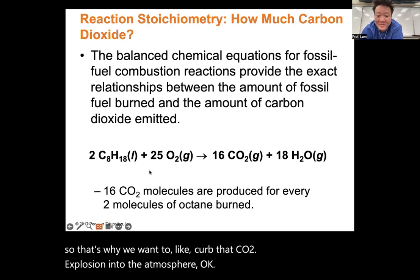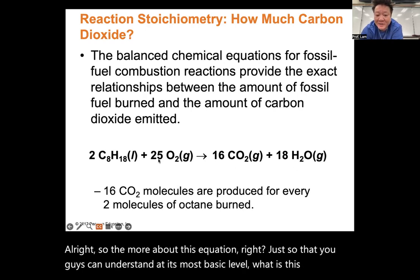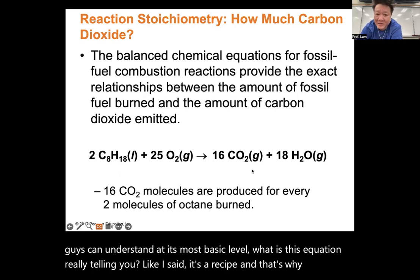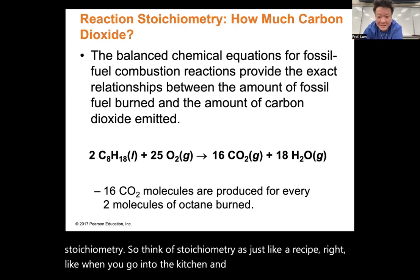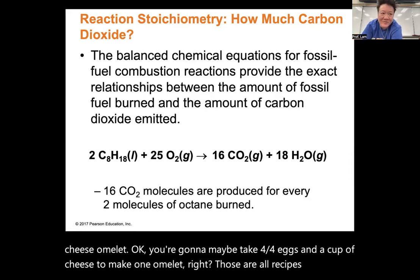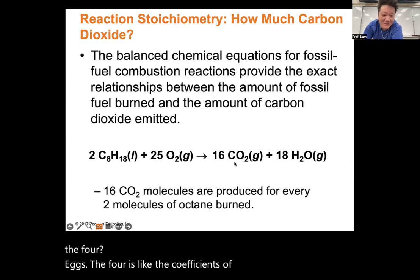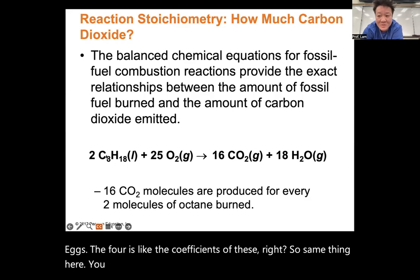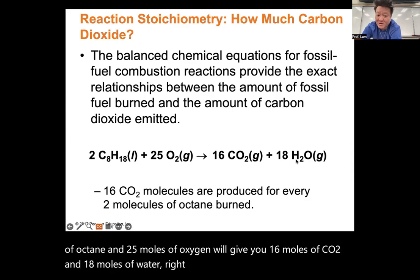That's what we call stoichiometry — think of it as a recipe. Like making a cheese omelet: 4 eggs and 1 cup of cheese makes one omelet; the 4 is like a coefficient. Similarly, 2 moles of octane and 25 moles of oxygen will give you 16 moles of CO2 and 18 moles of water. This gives you a recipe, so if I have 4 moles of octane, I'll produce 32 moles of CO2.